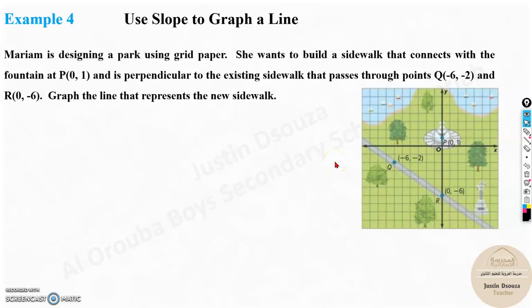Now we will solve a real-world problem. We will use slope to graph a line. Mariam is designing a path using grid paper. She wants to build a sidewalk that connects with the fountain at P and is perpendicular to the existing sidewalk that passes through points Q and R. Graph the line that represents the new sidewalk.